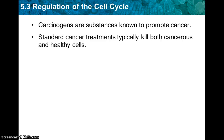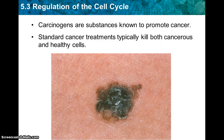Standard cancer treatments typically kill both cancerous and healthy cells. The two main types of treatments are chemotherapy and radiation — both will kill healthy cells as well as cancer cells. They're also looking at proton therapy, which involves shooting protons into the body to destroy cancer cells. It is still being tested but working its way up. This picture shows a mole turning into skin cancer.